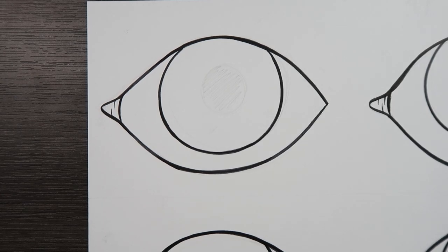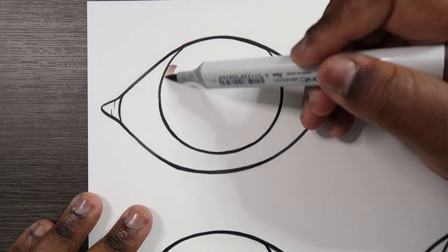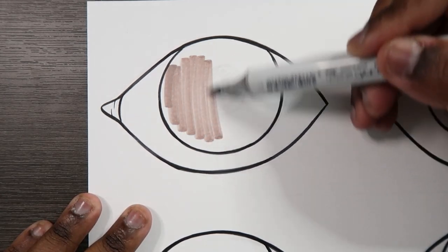Okay so for this one eye I'm going to be laying down a base color of E74. I'm just going to be coloring that in.